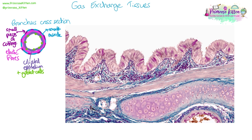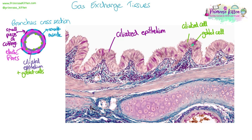Now looking at a bronchus — this is a highly magnified image so we can only see a section of the tube, not the whole circular cross-section. We can much more clearly see the ciliated epithelium here: the nucleus and mitochondria are clearly visible, and you can see the cilia on top poking out into the lumen. We can distinguish the pale pink ciliated cells from the dark pink goblet cells in between — two specialised cell types that were harder to distinguish in the bronchiole.